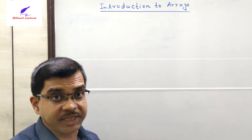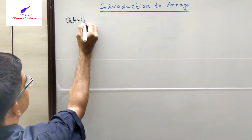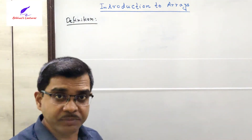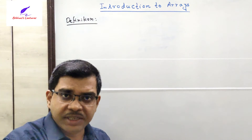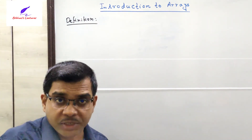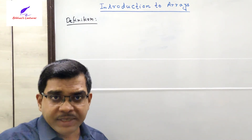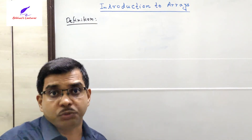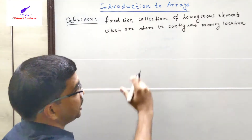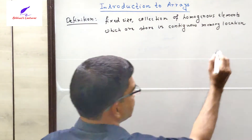Now we will try to understand what is an array. The definition of an array is: an array is nothing but a fixed-size collection of homogeneous type of elements — a collection of similar type of elements which are stored in contiguous memory locations. So in an array, under a single variable name, we can store more than one value at a time.